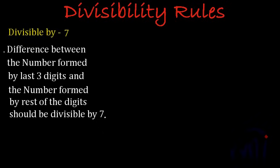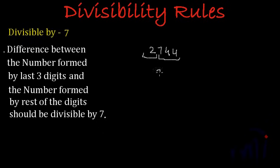The rule says: the difference between the number formed by the last 3 digits and the number formed by the rest of the digits should be divisible by 7. So let's take the number 2744. It is a 4-digit number, so we can have a number formed by 3 digits and a number formed by the rest of the digits. The numbers are 2 and 744.